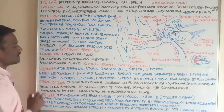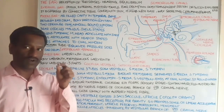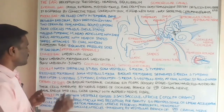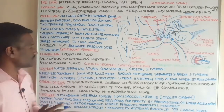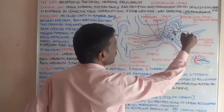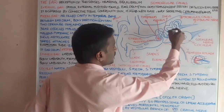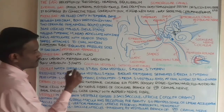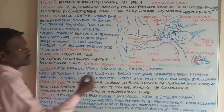The inner ear is a mostly fluid-filled region called the labyrinth. The labyrinth is divided into two parts: bony labyrinth and membranous labyrinth. The bony labyrinth has three parts: cochlea, vestibule, and semicircular canals.